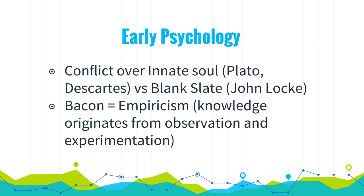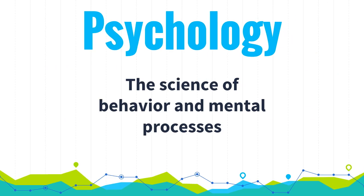John Locke concluded that the mind is a tabula rasa, or blank slate. His ideas combined with those of Francis Bacon eventually formed empiricism — the philosophy stating that knowledge originates from observation and experimentation. That's really the origin of modern science and what begins to form the foundation of psychology.